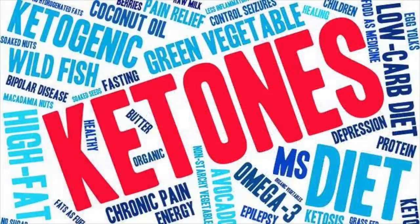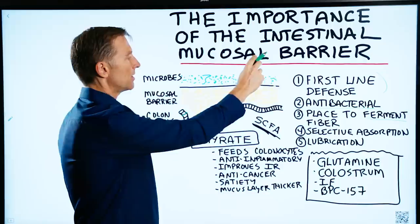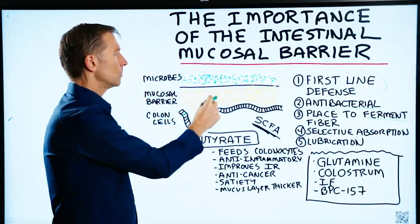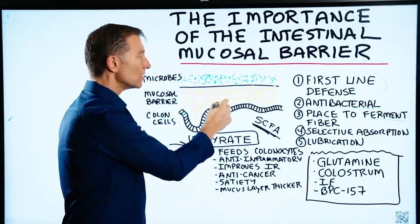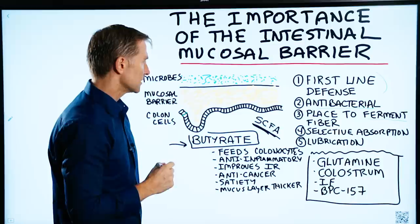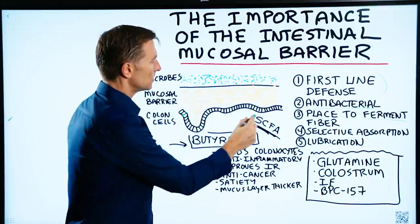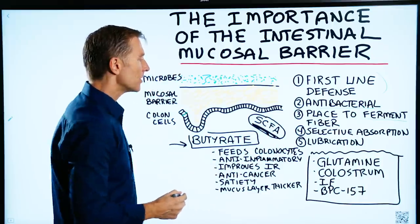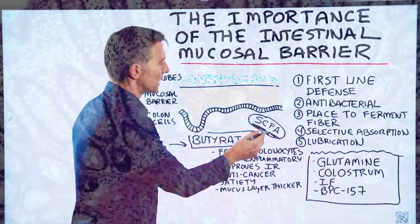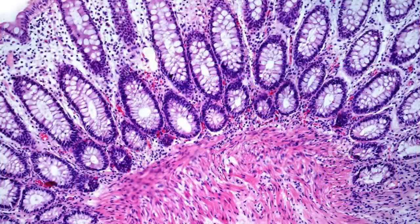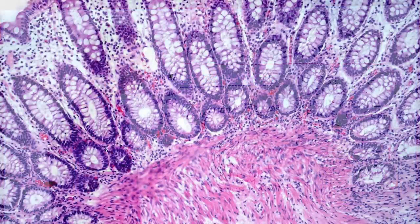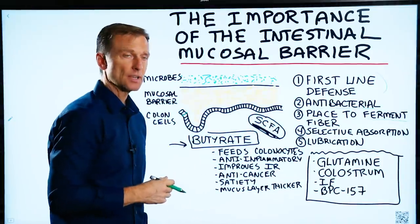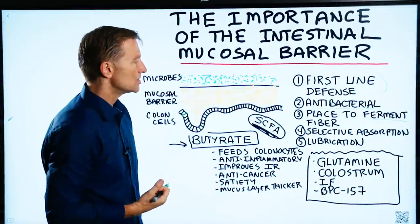So butyrate has ketone effects. Another function of this barrier would be selective absorption — the body is going to absorb certain things it wants and not others. The one thing it will definitely absorb is this short-chain fatty acid, because the primary function of this acid is to feed the colon cells. What's not used as energy by the colon cells can also be absorbed by the liver and used as energy.